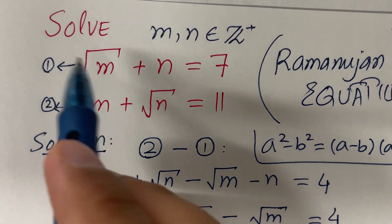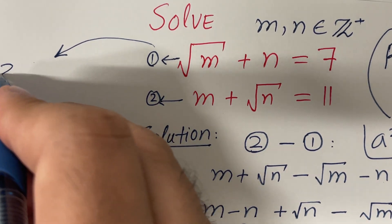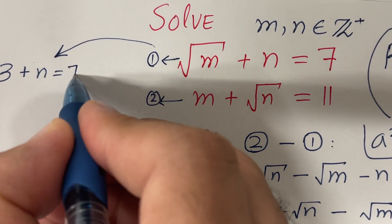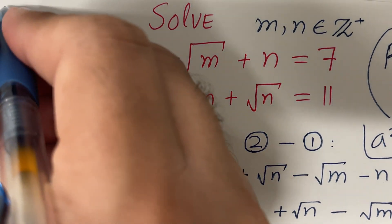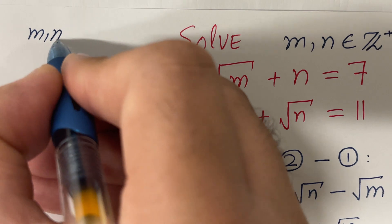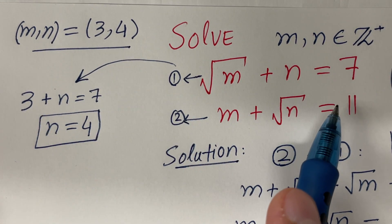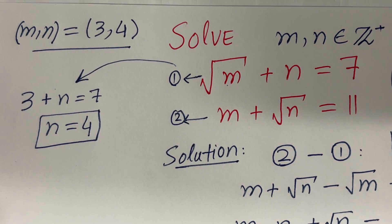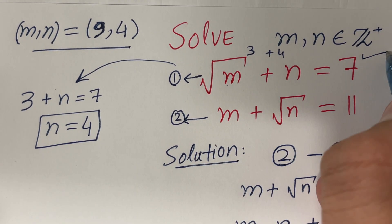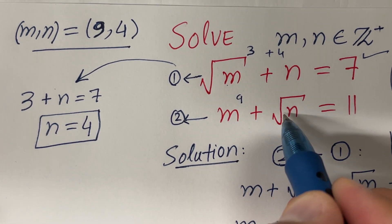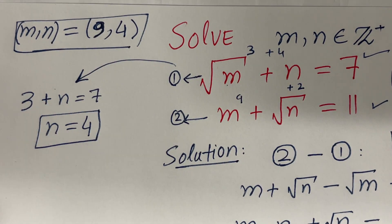Looking at the given equations and plugging in m=9: from equation 1, √m is 3 and m is 9, so 3 plus n equals 7, giving n equals 4. So the solution is m=9 and n=4. Let's verify: √9 plus 4 is 3+4=7 — that satisfies equation 1. And 9 plus √4 is 9+2=11 — that satisfies equation 2. So this is the correct solution to this Ramanujan equation.